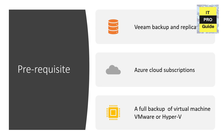The prerequisites you need: Veeam Backup and Replication installed in your environment, a cloud subscription from Microsoft Azure, and a full backup of a virtual machine from VMware, Hyper-V, or a physical workload. Once you have a complete full backup and your Azure Cloud subscription is ready, you can restore this backup to Microsoft Azure.